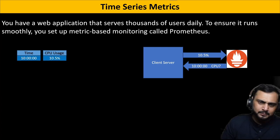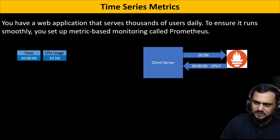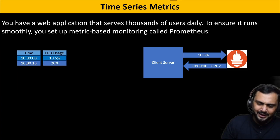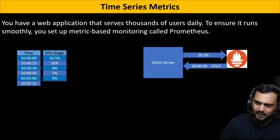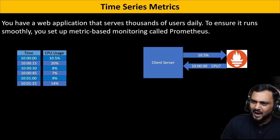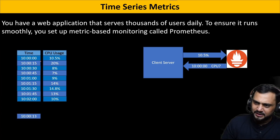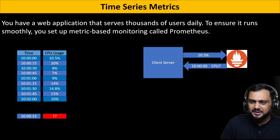For example, the Prometheus server sends a request to the client server at 10:00 AM and checks CPU usage — at that time it was 10.5%. At 10:00:15 it was 20% CPU utilization, and similarly at 10:00:45. So Prometheus pulls the metrics every 15 seconds. But if someone asks what was the CPU usage at 10:00:13 — there is no data for that point.